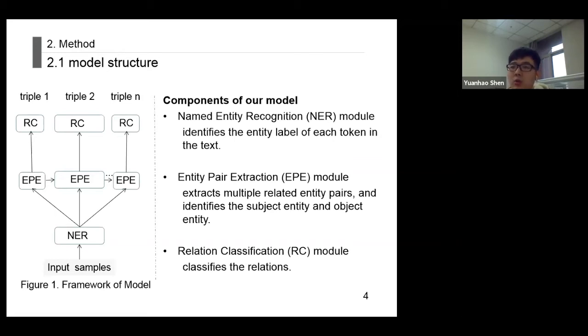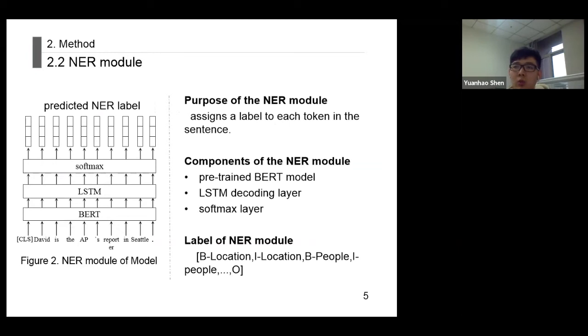The named entity recognition module identifies the entity label of each token in the text. The NER module includes a pre-trained BERT model for generating word embedding, an LSTM decoding layer for solving label dependencies, and a softmax layer. The labels of NER modules are in BIO format. The entity category depends on the specific dataset.